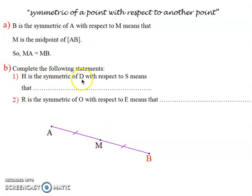Example: H is the symmetric of D with respect to S. So S is the mirror, is the midpoint. The last letter we reach in the symmetry statement is always the midpoint. So S is the midpoint of segment DH. Notice how we read the statement in reverse.